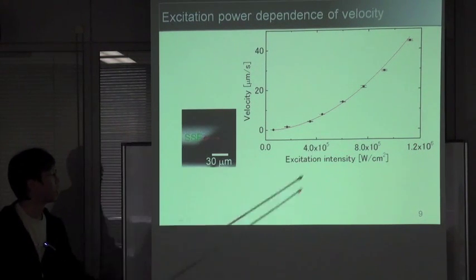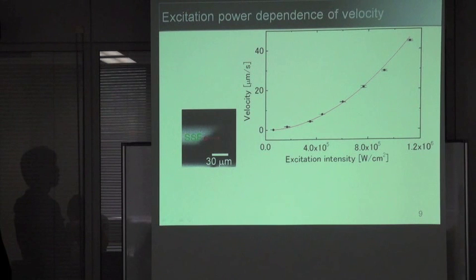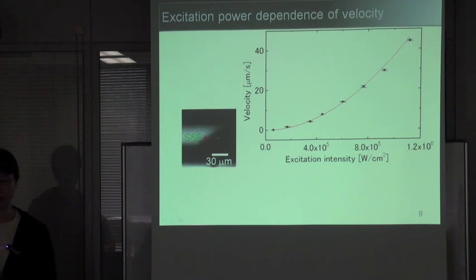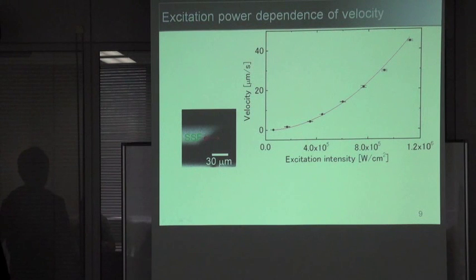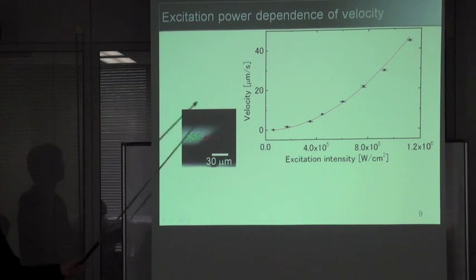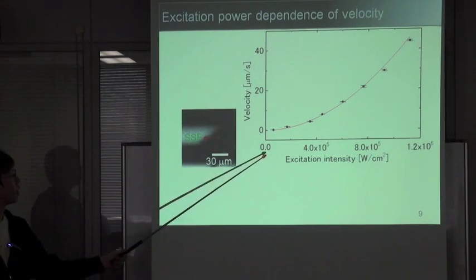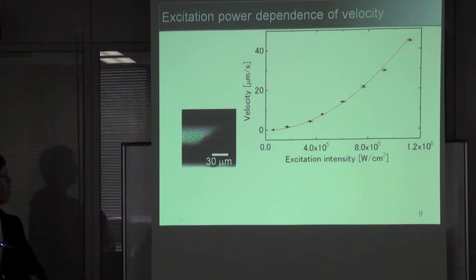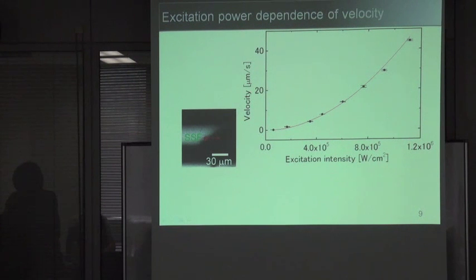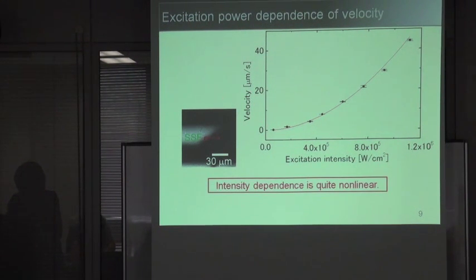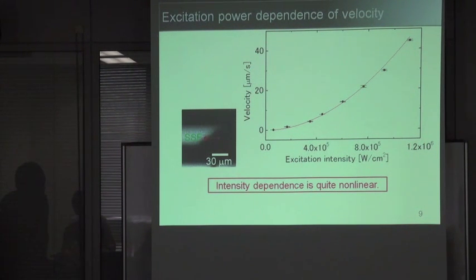This graph shows the excitation intensity dependence of the glide velocity of 30-degree partial dislocations bounding the Shockley stacking faults. As you can see, the dislocation glide velocity increases with the excitation intensity quite nonlinearly. The trivial cause of this nonlinearity one might suspect is the rise of the sample temperature under intense laser illumination.